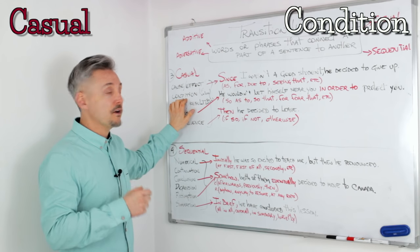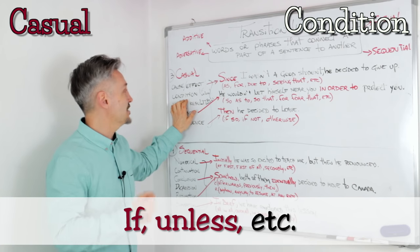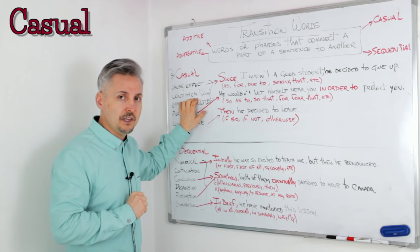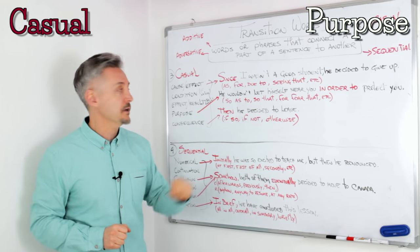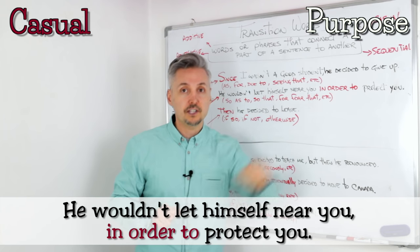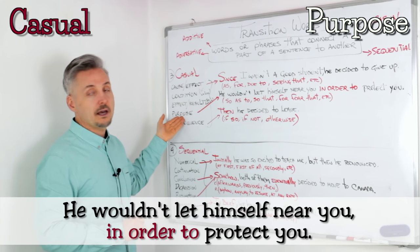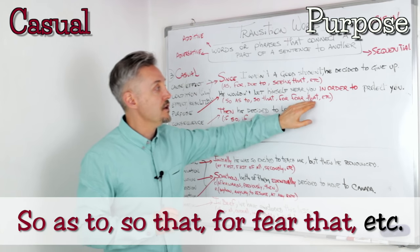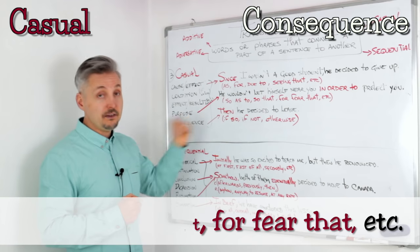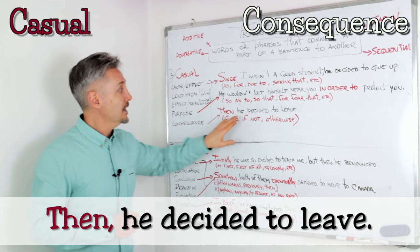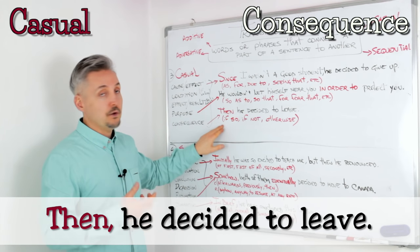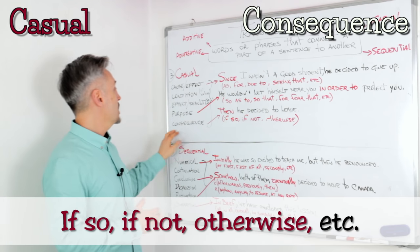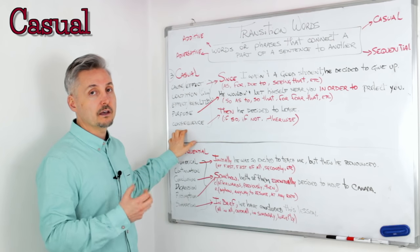I don't have an example for condition, but you can use 'if,' 'unless,' etc. Why don't you write your own example in the comments? For purpose: 'He wouldn't let himself near you in order to protect you.' 'In order to' can be replaced with 'so as to,' 'so that,' 'for fear that,' etc. For consequence: 'And then he decided to leave.' 'Then' can be replaced with 'if so,' 'if not,' 'otherwise,' etc.